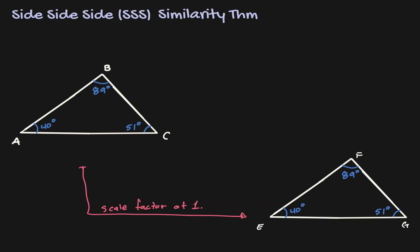We can claim that these two triangles are similar to each other. Notice that the interior angles did not change in measurement, and in addition, the sides are still proportional to each other. AB is proportional to EF by a scale of 1, AC is proportional to EG by a scale of 1, and BC is proportional to FG by a scale of 1.